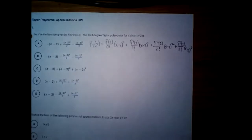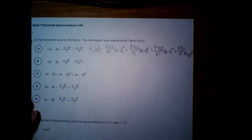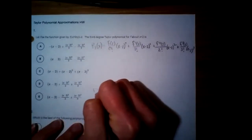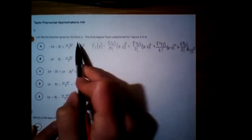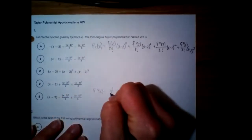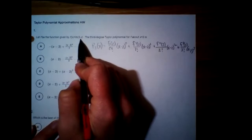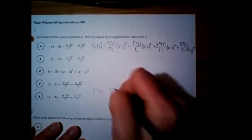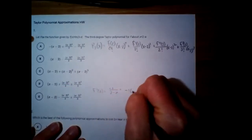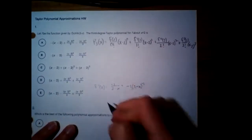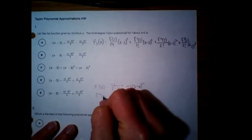We're going to need the first, second, and third derivatives. So the first derivative is going to be 1 over (3 - x), and then chain rule — we multiply by the derivative of (3 - x), which is negative 1. So this is negative 1 times (3 - x) to the negative first.